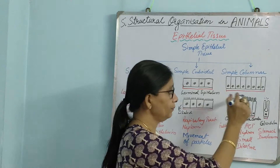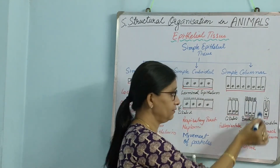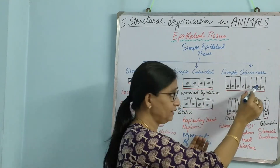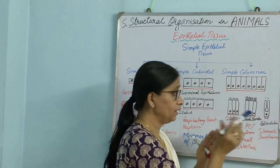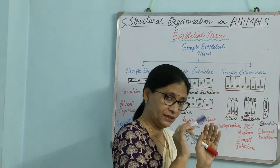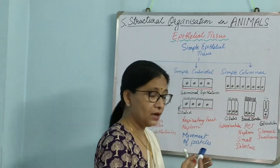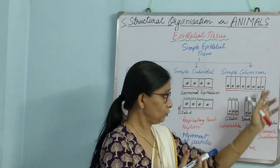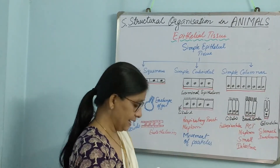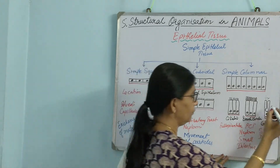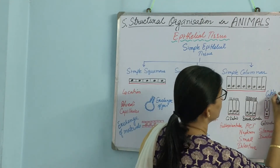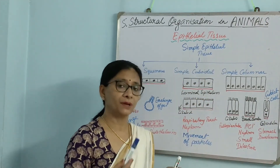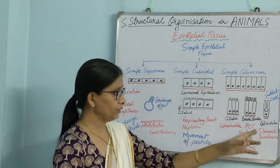The third type of columnar epithelium is glandular — the purpose is secretion. Each cell becomes like a gland structure, with a small concavity, and they secrete mucus or other substances into this cavity, which then comes out. These are called goblet cells, and they are found in the stomach and duodenum. So these are epithelial cells that have become glandular — meaning they are secreting some substance.